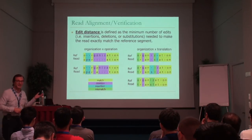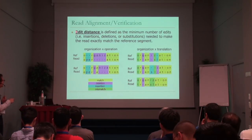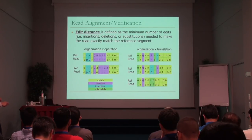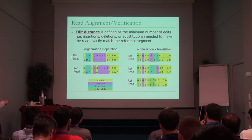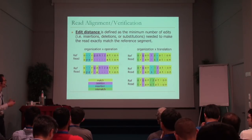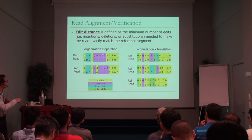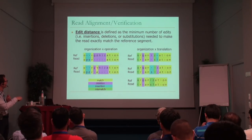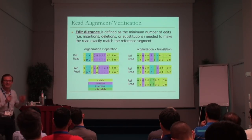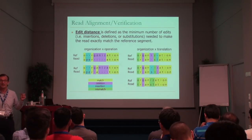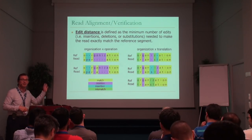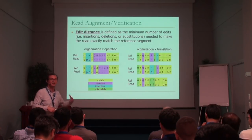For example, if your read is 'operation' and your reference is 'organization,' you need to figure out how many matches, deletions, insertions, and mismatches there are. In this case, the edit distance is seven — five deletions and two insertions. This is a very complicated process; people develop dynamic programming algorithms for it and try to accelerate it with different algorithms, yet it's still not enough.